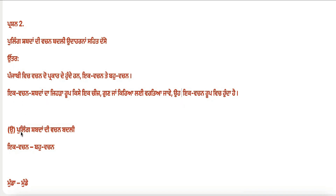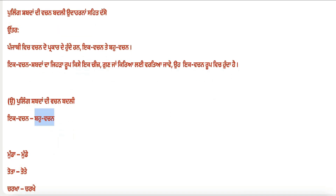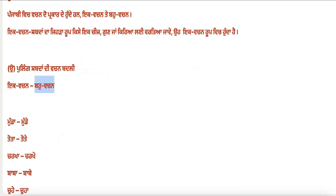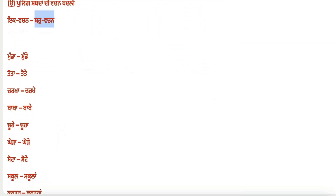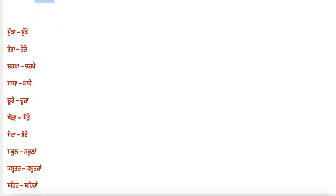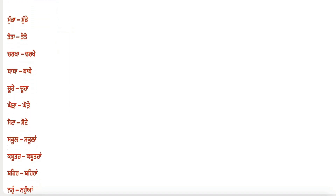Now, the vachan change for pulling (masculine) words. Singular to plural — for example: munda–munde, tota–tote, charkha–charkhe, baba–babe, chuha–chuhe, koda–kode, sota–sote. For words like school–schoola, kabutar–kabutara, shehar–shehara.